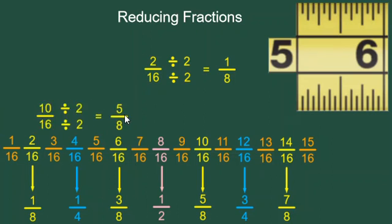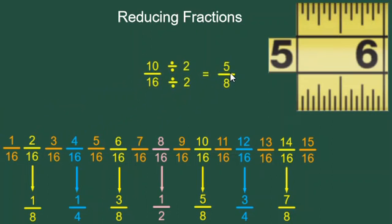Another example of a yellow fraction is 10 sixteenths. 10 and 16 also have a greatest common factor of 2. So again, I divide top and bottom by 2 and I get 5 eighths. All of the yellow fractions work like this.